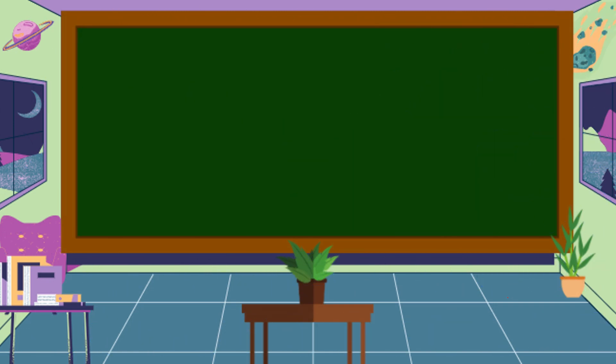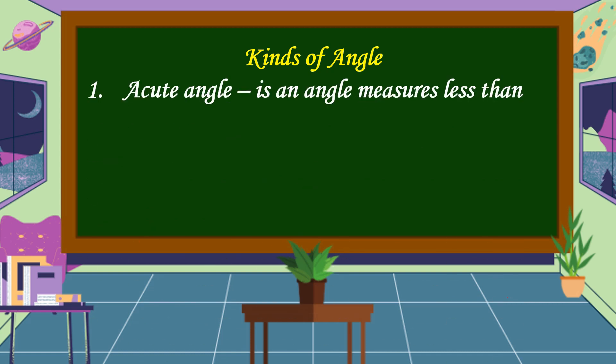Let's discuss about kinds of angle. The first kind of angle is an acute angle. When we say acute angle, it is an angle measures less than 90 degrees.